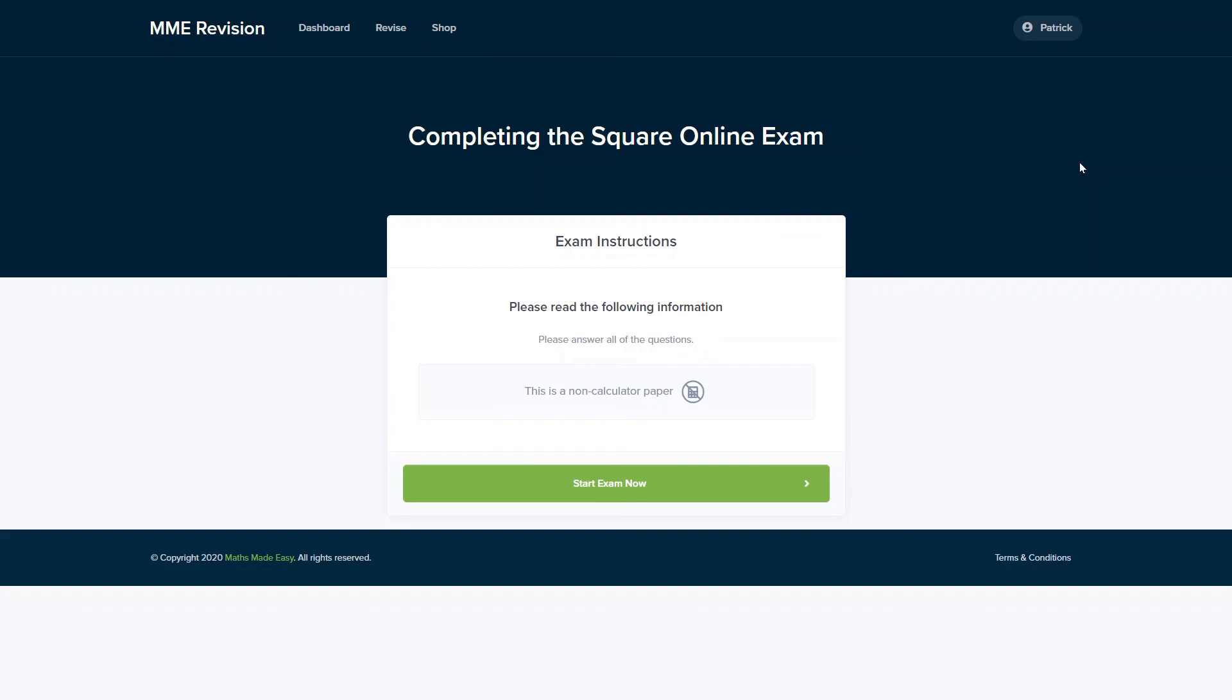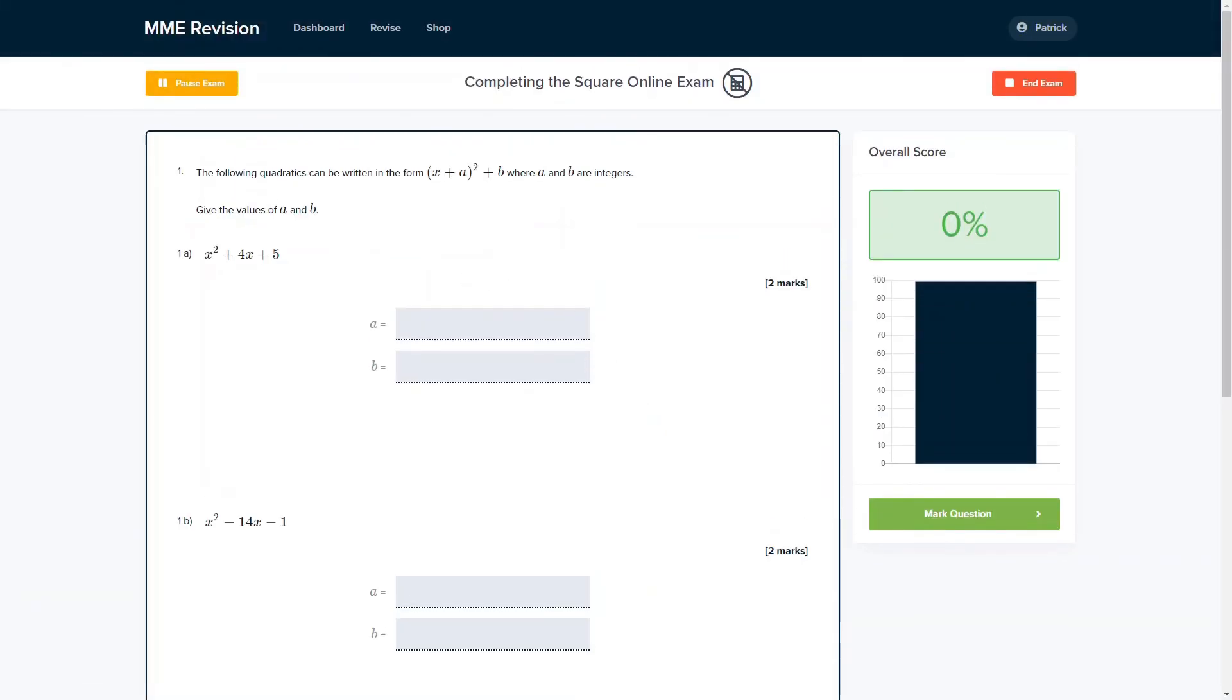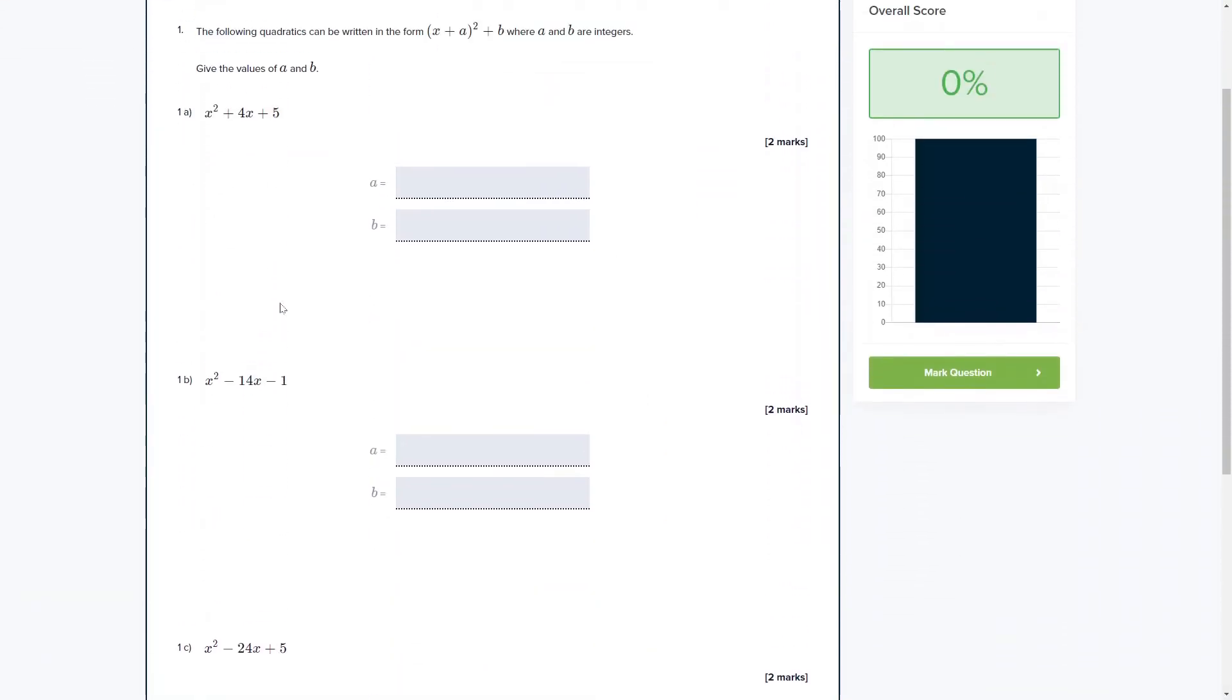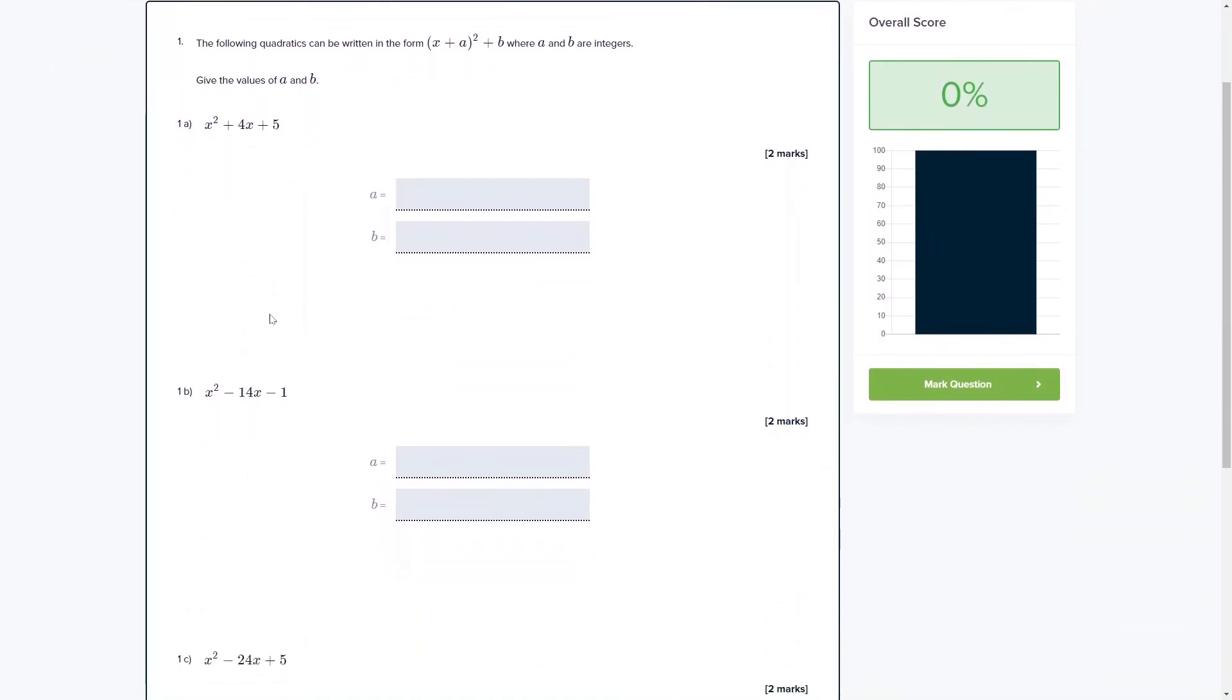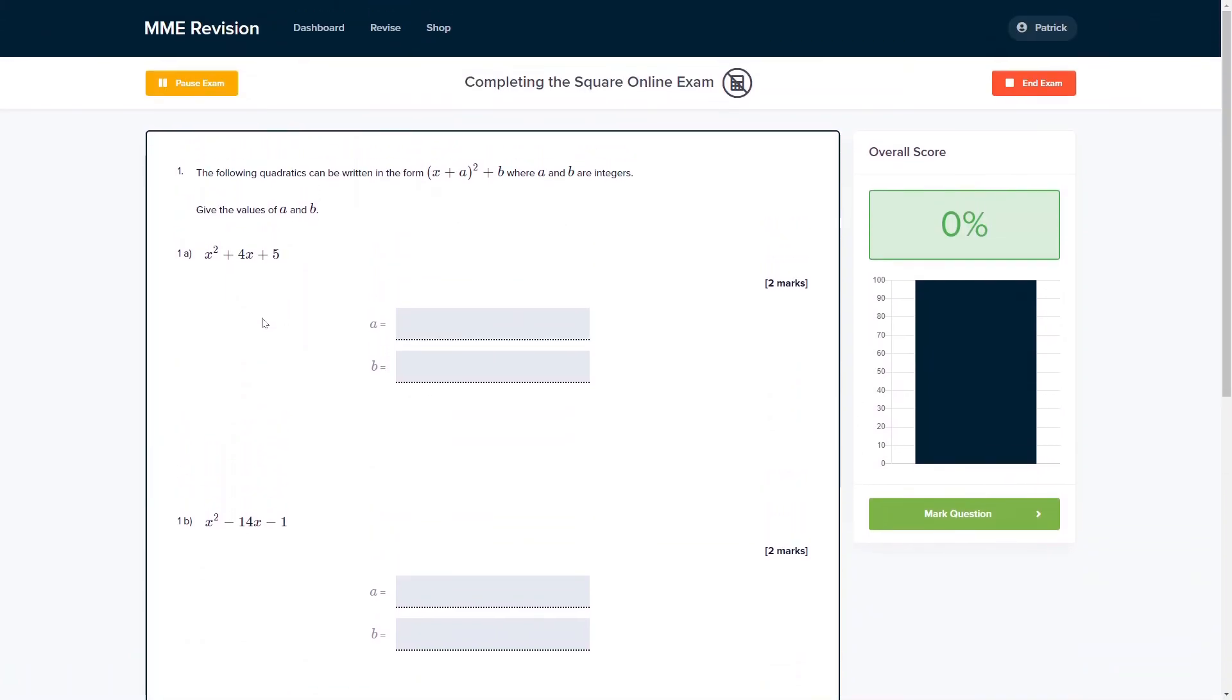Completing the square is one of the hardest topics in GCSE maths, so if you want to get some practice in, you can do so with our online exam. This is available through our revision platform, where you'll find loads of different questions to have a go at. You'll get instant feedback on each and every one, so it's a really good way of finding out where you're going wrong and how you can improve for your exam. If you're interested, you can click the link below.